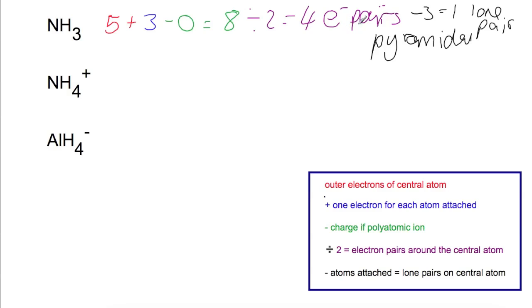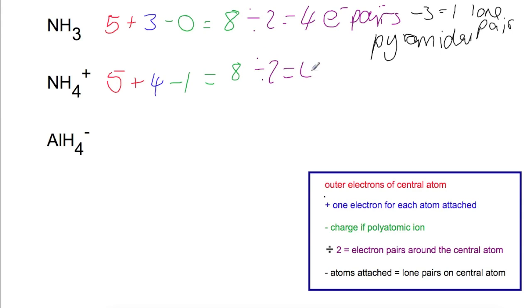If you're asked for the shape of the electron pairs, that would be tetrahedral, so read the question carefully — they may want the shape of the electron pairs around the central atom or the shape of the molecule itself, ignoring the lone pairs. For NH4+, nitrogen again has five electrons. We add four atoms and minus the charge of plus one, giving eight electrons. Dividing by two gives four electron pairs. With four atoms attached, there are no lone pairs, so both the molecular shape and the electron pair shape are tetrahedral.